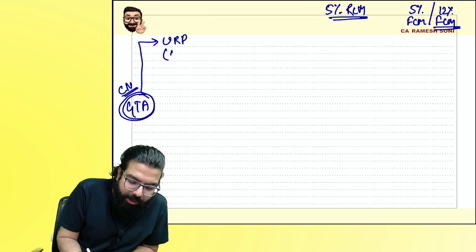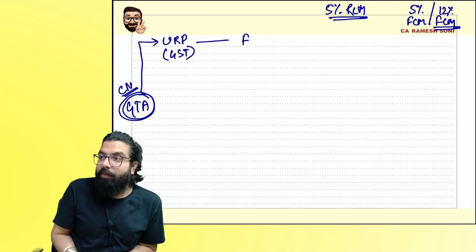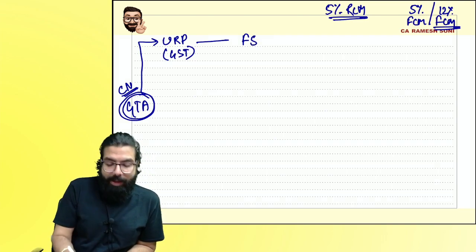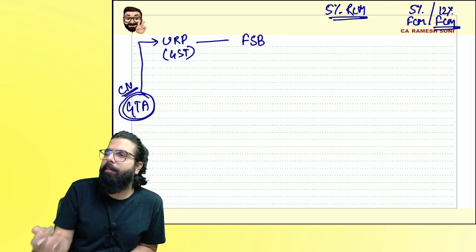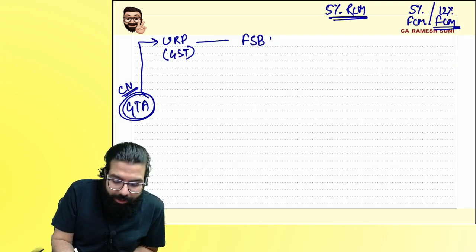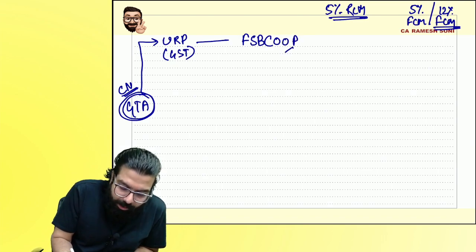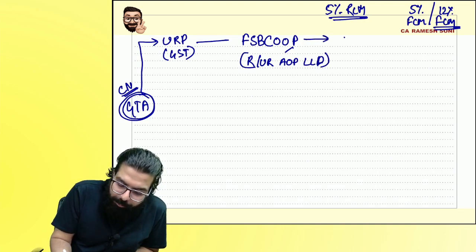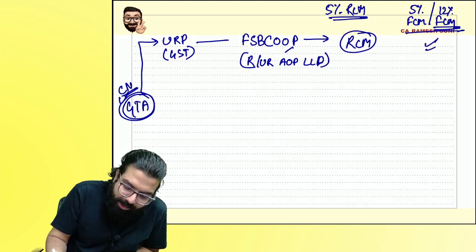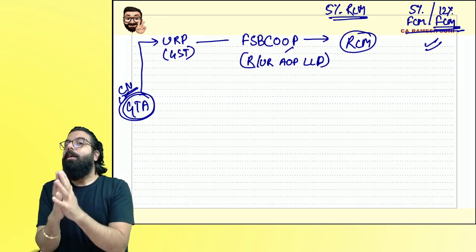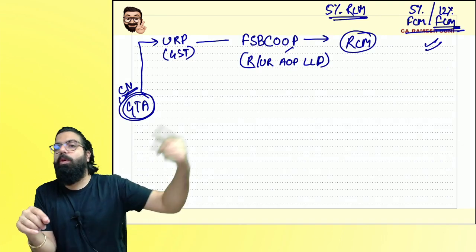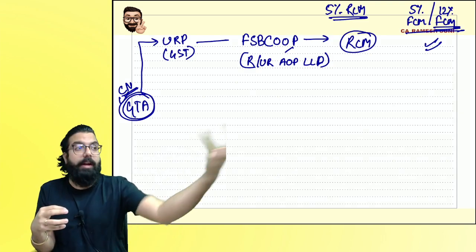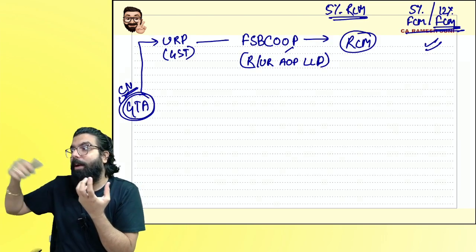If GTA is providing services to a factory registered under the Factories Act, society, body corporate, cooperative society, partnership firm (registered or unregistered under Partnership Act, including AOP and LLP), then RCM will apply. But if the GTA is under forward charge, forward charge mechanism applies. An unregistered GTA means you pay under RCM. If registered and opting for 5%, GTA collects 5% and pays to the government but gets no ITC. At 12%, GTA gets ITC.